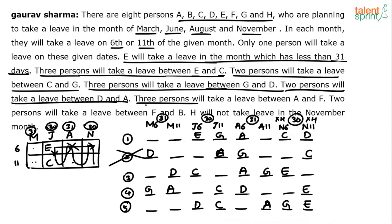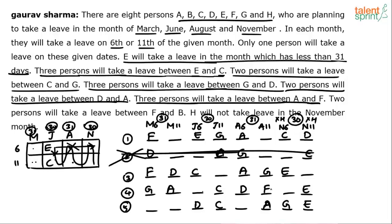Three persons will take a leave between A and F: A dash dash dash F. In case 1, the only possibility leads to an overlap, so case 1 is also ruled out. For the remaining cases, A dash dash dash F is placed accordingly.